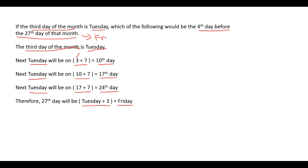Now we need to go four days before the 27th. The 27th is Friday, so Friday minus four days gives us Monday. Therefore the required day is Monday.